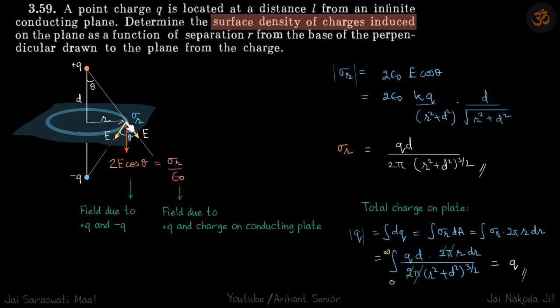At this point, let's find the value of sigma_r. Because of the plus q charge, the electric field is going in this direction, and because of the minus q charge, the electric field is going in this direction. The net electric field at this point is vertically downwards; its value will be 2E cos theta.